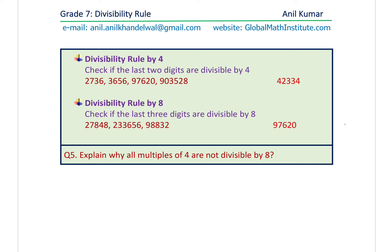Now let's talk about divisibility by 4. Check if the last two digits are divisible by 4. If the last two digits are divisible by 4, then the whole number is divisible by 4. For example, last two digits 36: 4×9=36, it works. 56: 4×14=56, it works. 20 and 28 also work. But the last example — 4×8=32 and 4×9=36 — this number's last two digits are not divisible by 4.